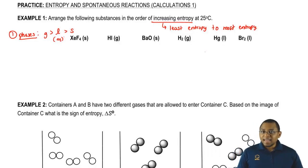Next, if they have the same phase, then we look at complexity. And remember, the more elements that you have within the compound that make it up, the more complex it is and therefore the more entropy it has.